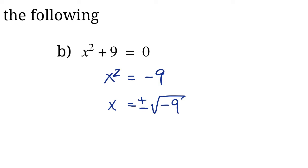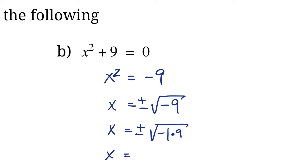There actually is a way to find a solution to this problem. We're going to start off by simplifying that thing underneath the radical. We can actually represent negative 9 as negative 1 times 9, so let's replace that under the radical — we're basically just removing that negative from the 9 and making it negative 1.